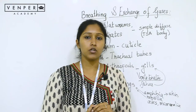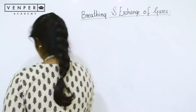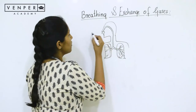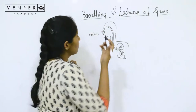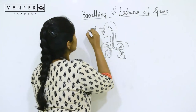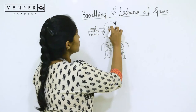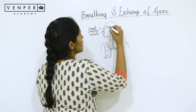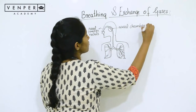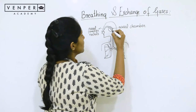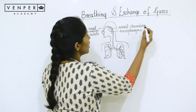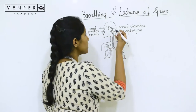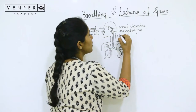Now let us look at the structure of our respiratory system. It is a rough diagram of how you see it. Externally we have the nostril and the nasal passage, which leads to the nasal chamber. From the nasal chamber, you arrive at the nasopharynx, which is part of the pharynx common to both the digestive and respiratory systems. From the nasopharynx, via the larynx, it goes to the windpipe or trachea.